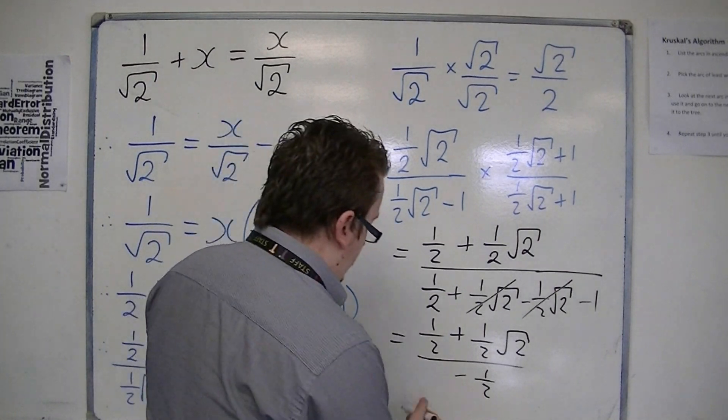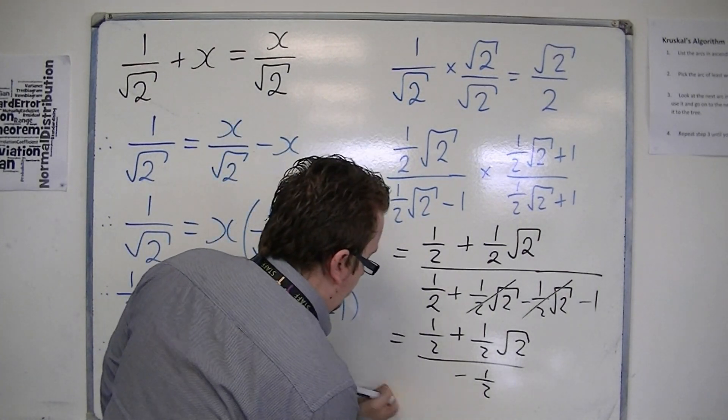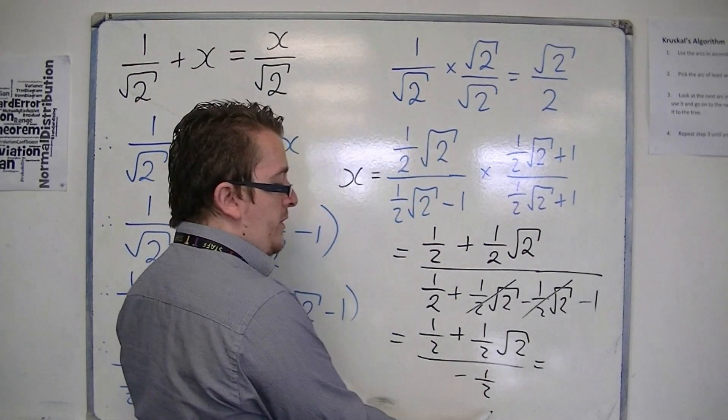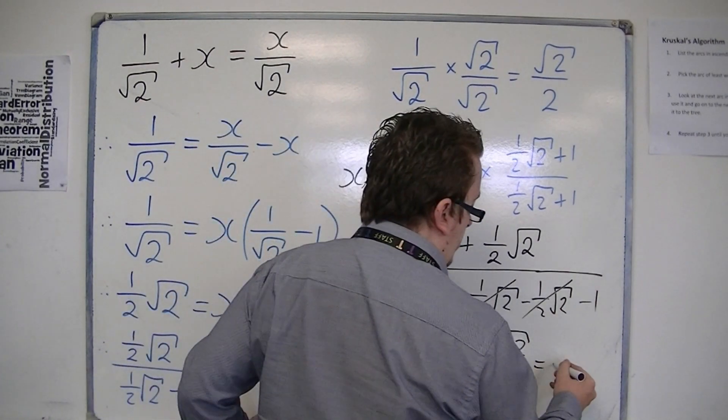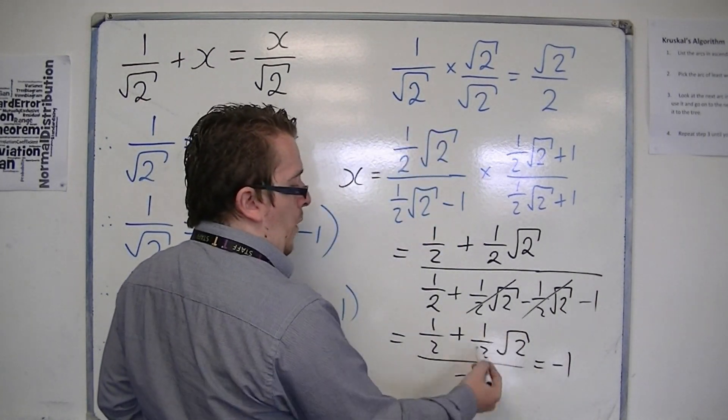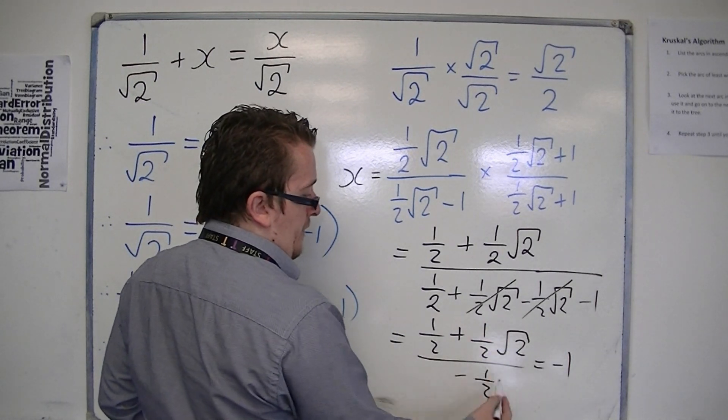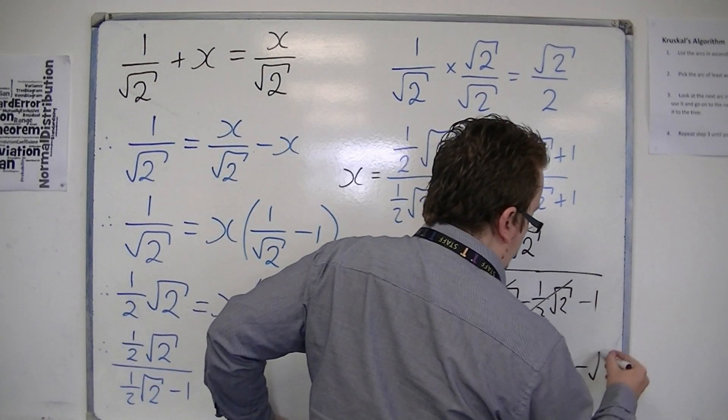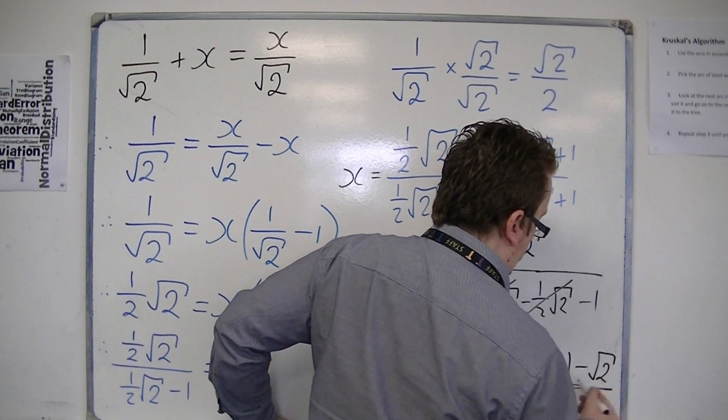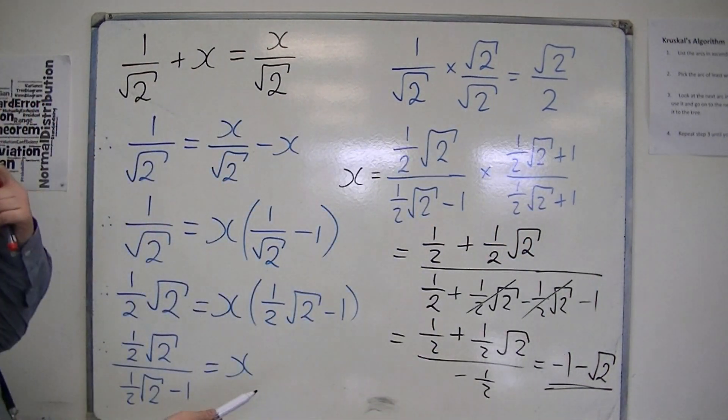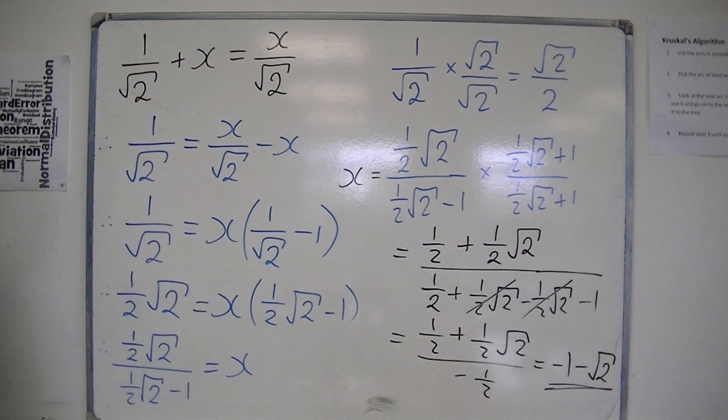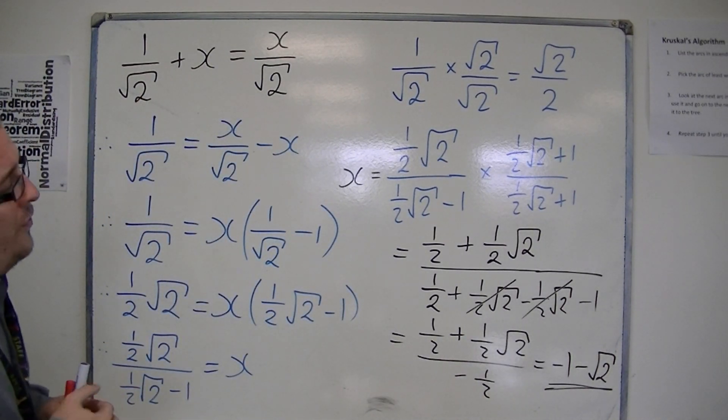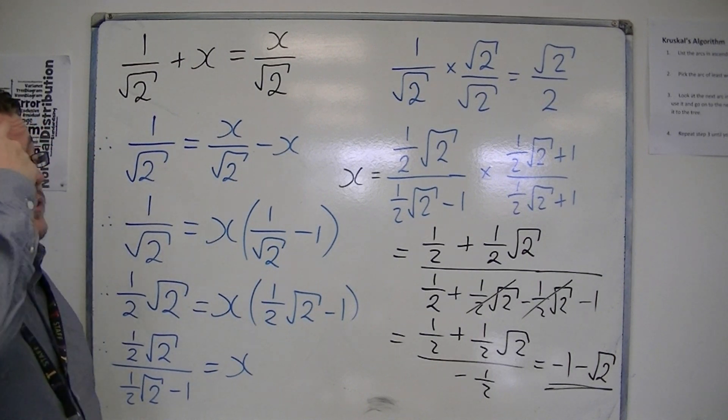So in doing that, by dividing through by minus 1 half, we've got 1 half divided by minus 1 half is minus 1, and 1 half root 2 divided by minus 1 half is just minus root 2. So x is minus 1 take away root 2 in its most simplified form. So that is the process that I was immediately thinking.